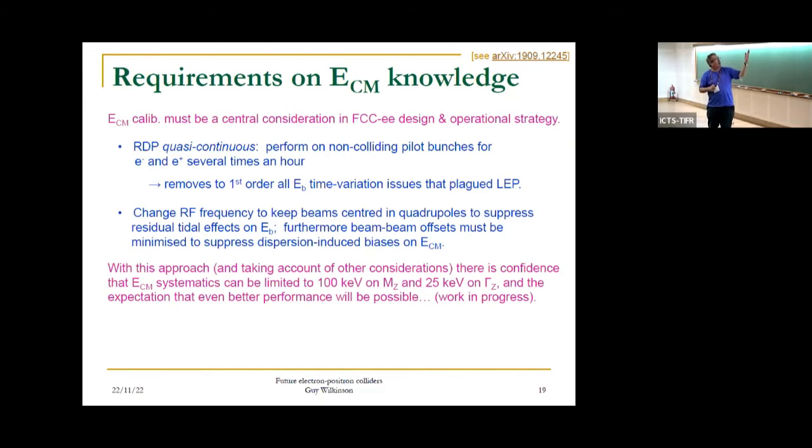At this machine, in contrast to LEP, the idea of energy calibration is built in from the start. The key idea: rather than making measurements scattered by weeks at a time, we would do it continuously. We will measure the energy of the beams continually on non-colliding pilot bunches several times an hour. This removes to first order all the problems we had at LEP. We can also change the RF frequency continually to keep beams centered in the quadrupoles to remove residual tide effects. With this approach, there is confidence that collision energy systematics can be limited at least to 100 keV on MZ and 20 keV on gamma Z. This is still somewhat above statistical precision, but expectation is that even better performance will be possible.